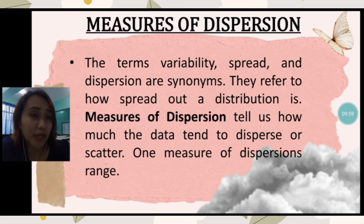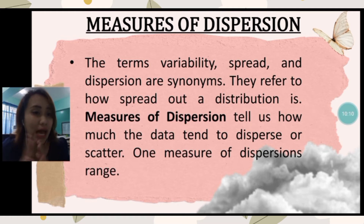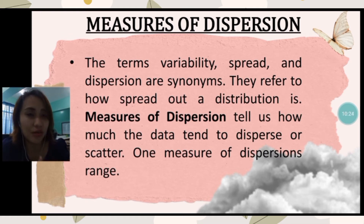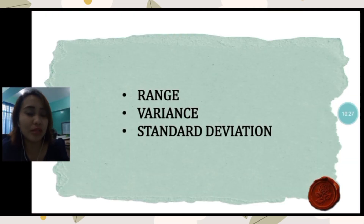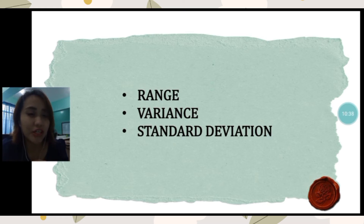Next, we proceed with the measures of dispersion. The terms variability, spread, and dispersion are synonyms — they refer to how spread out a distribution is. Measures of dispersion tell us how much the data tend to disperse or scatter. One measure of dispersion is the range. For the measures of dispersion, we have the range, the variance, and the standard deviation.